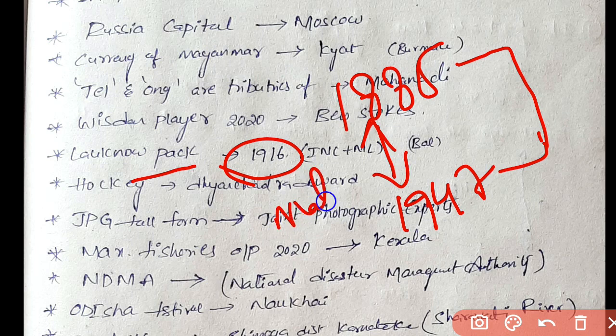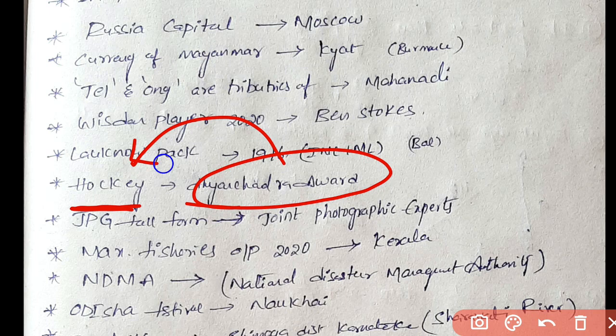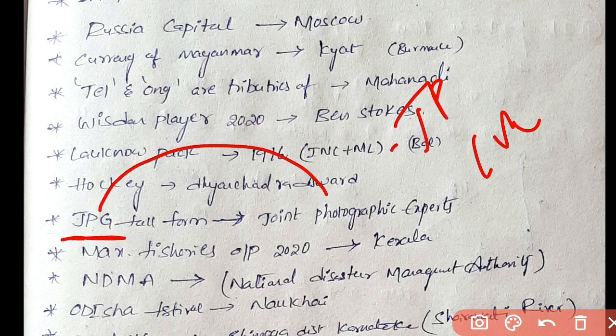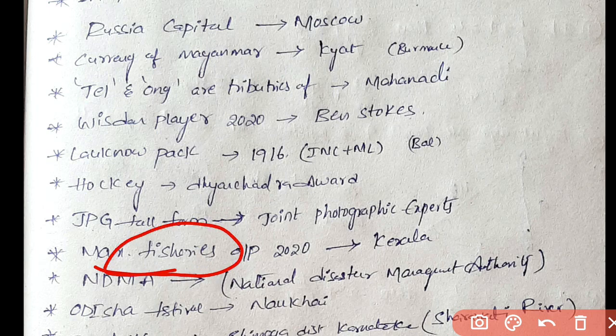Dhyan Chand was hockey player. JPEG full form is Joint Photographic Experts Group. Next one, state with maximum fisheries output. Compare all states, Kerala is the answer in 2020.